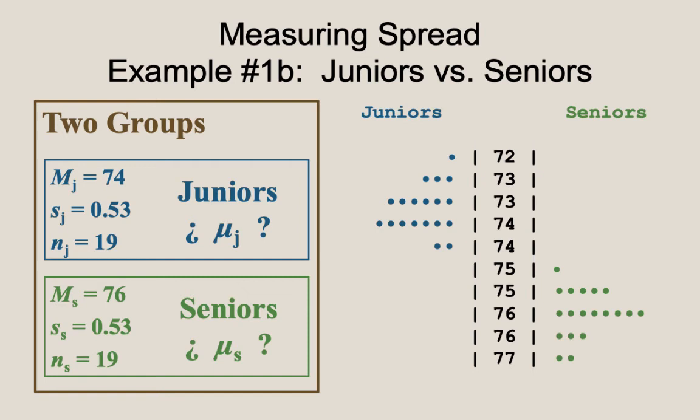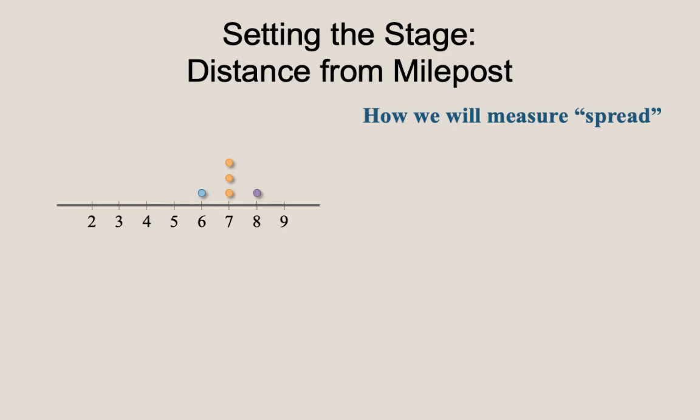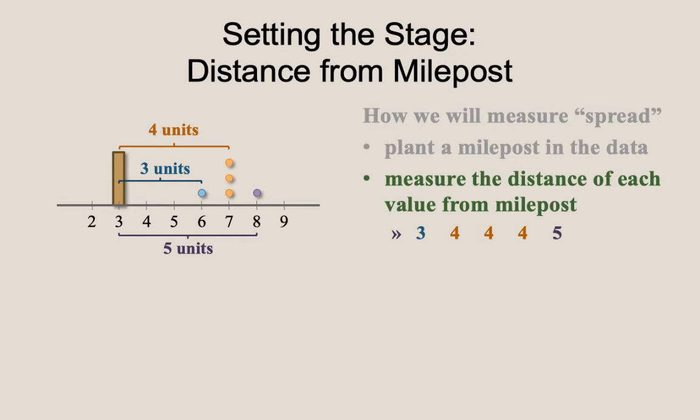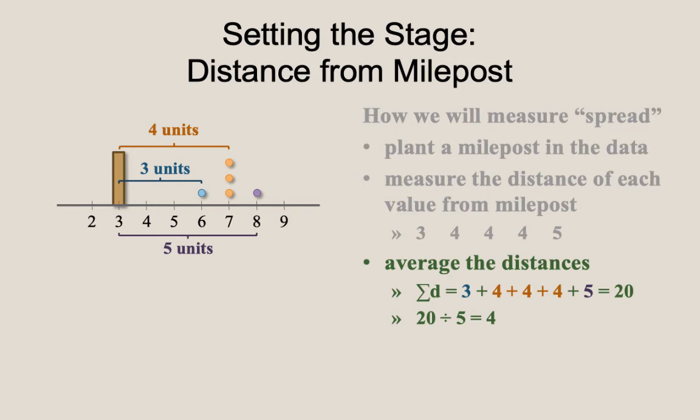To set the stage for the formal definition of the standard deviation, let's come up with a way to measure the spread of a data set. First, imagine we have planted a mile post on the number line at the value 3. Let me emphasize that there's nothing special about the number 3 here. Some might be thinking 7 would be a better choice, and that is indeed the correct type of thinking here, but hold on to that for a moment. Next, we'll measure the distance of each data value to the mile post. Here we get the values 3, 4, 4, 4, and 5. Now, find the average of these distances. 3 plus 4 plus 4 plus 4 plus 5 is 20, and the average distance from the mile post would be 20 divided by 5, which is 4.